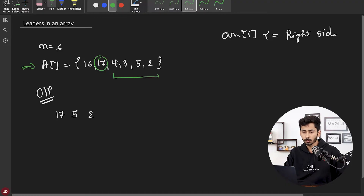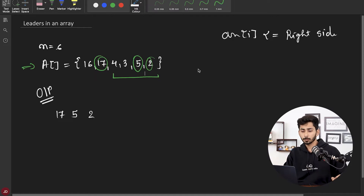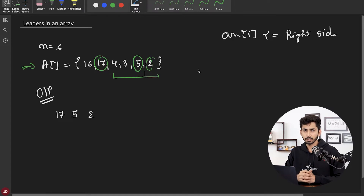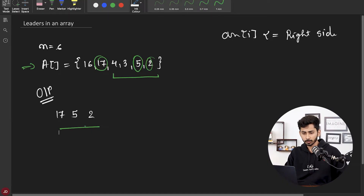Can 4 be a leader? No. Can 3 be a leader? No. Can 5 be a leader? Yes, all elements on its right are lesser than or equal to 5. What about 2? Nothing is present on the right hand side of 2, so obviously 2 is going to be a leader. You have to output all the leaders, hence the output comes out to be 17, 5, and 2 for this question.